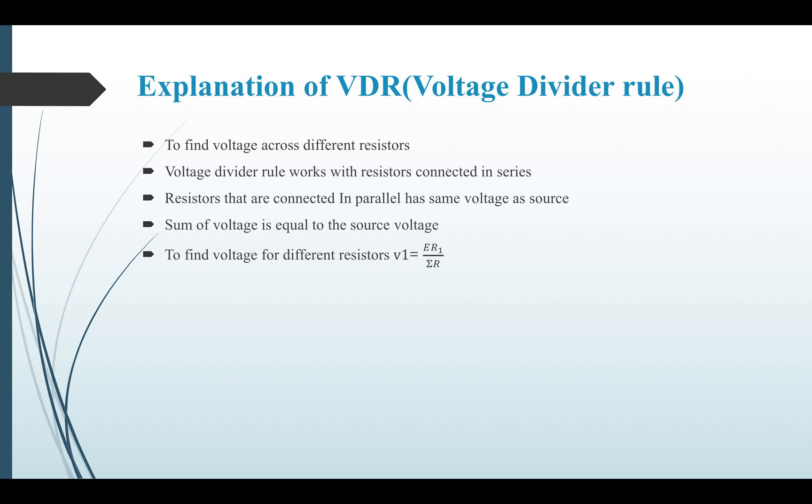And here is the VDR formula. V1 equals source voltage multiplied by resistance 1 and divided by total resistance. If you want to find the voltage V2 across resistance 2, the formula changes. V2 equals source voltage multiplied by resistance 2 divided by the total resistance.